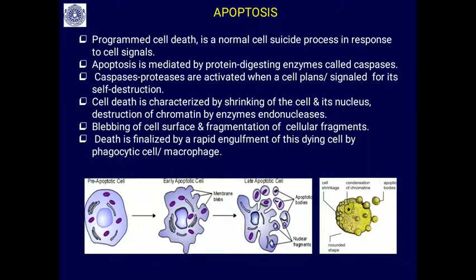Apoptosis is mediated by protein-digesting enzymes called caspases. These proteases are present in the cytoplasm in inactive form as pro-caspases. Pro-caspases get activated into active caspases when the cell is signaled for self-destruction. Cell death is characterized by shrinking of the cell and its nucleus, and destruction of chromatin by endonucleases. It is a regulated event involving many reactions driven primarily by caspase activation.